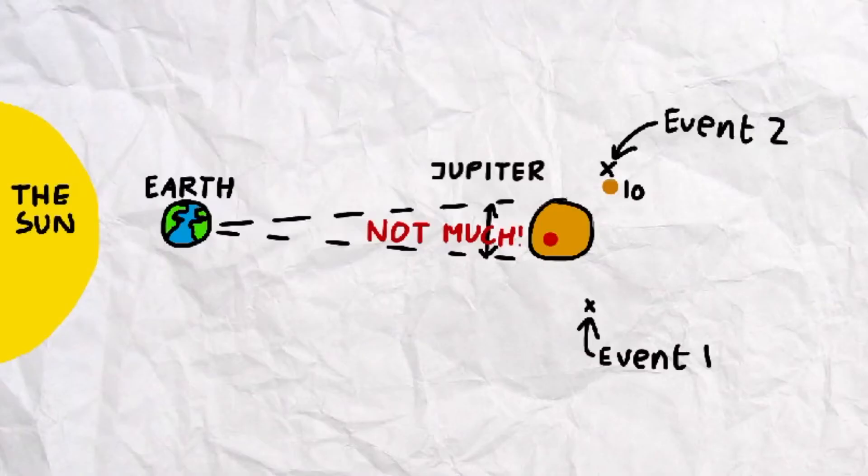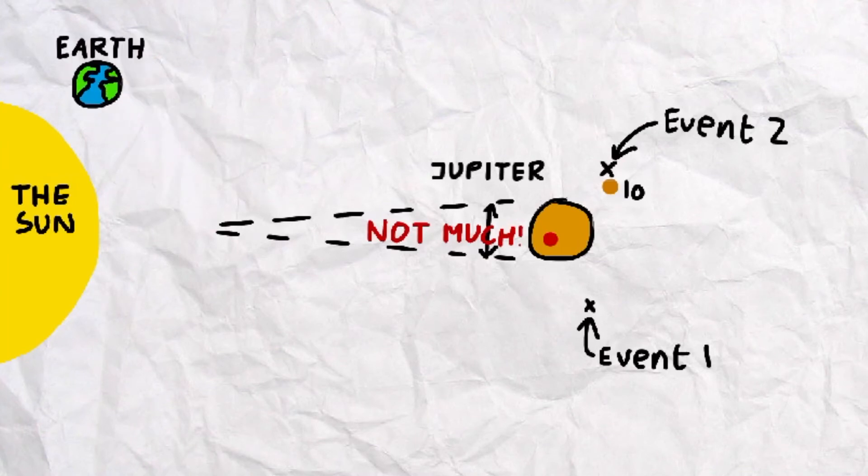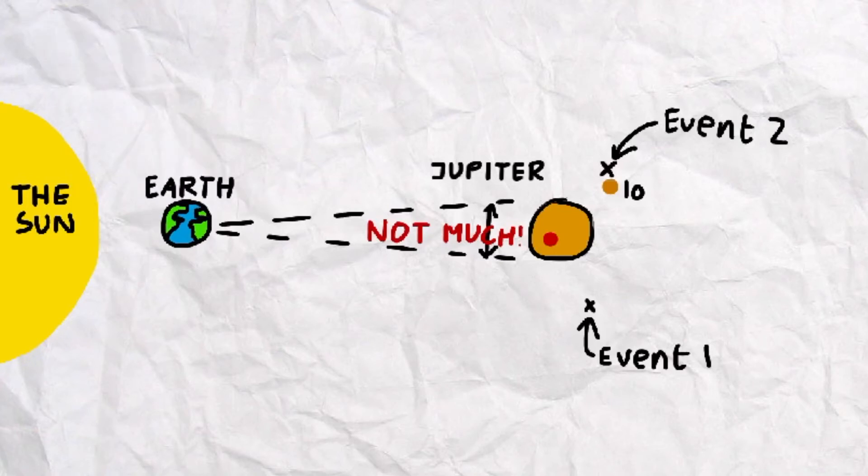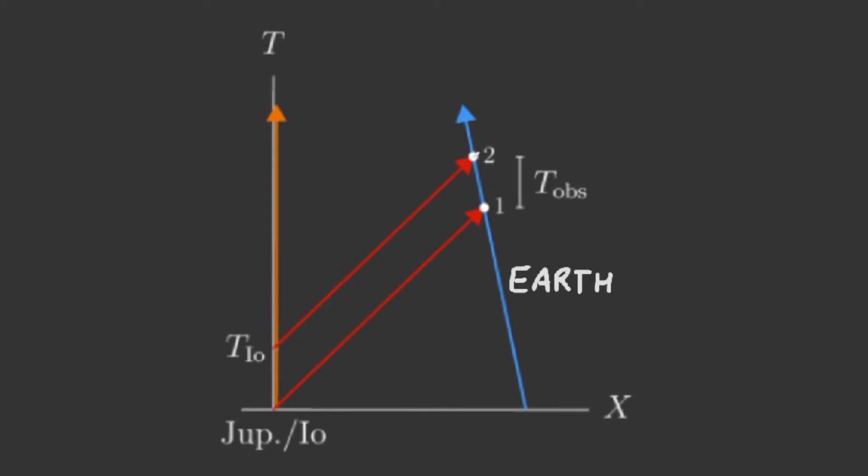However, as we all know, that is not true. Even though Jupiter does not move by a considerable amount during the time interval as Io traverses between points 1 and 2, Earth definitely moves a large amount, either away from Jupiter or towards it. During Rømer's observations, Earth was moving towards Jupiter, and therefore the space-time diagram would now look slightly different. Earth's world line would tilt slightly to the left since it's approaching Jupiter.